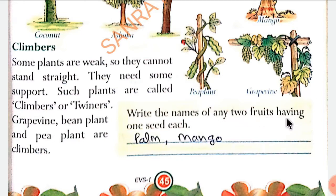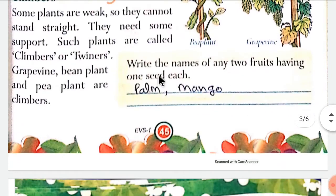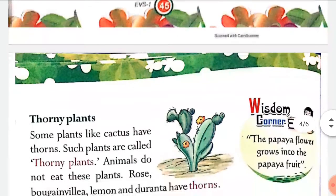Write the name of any two fruits having one seed each — kuch fruits ke naam likho jinke andar ek hi seed hota hai. Mango — mango ke andar ek ki seed hoti hai. Aur palm ke andar bhi ek ki beej hoti hai.